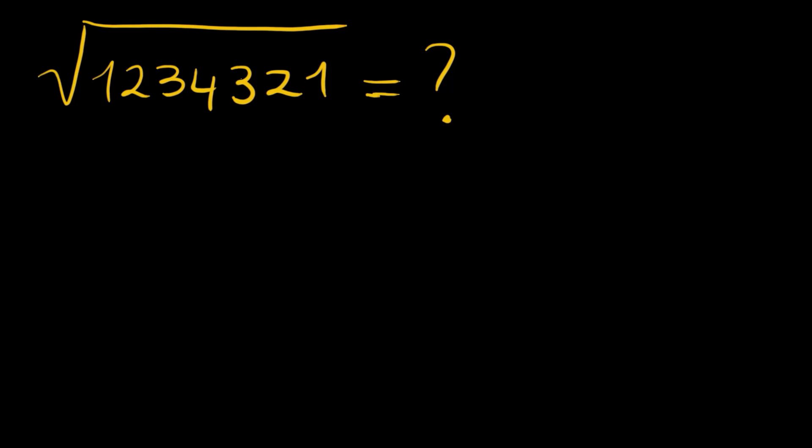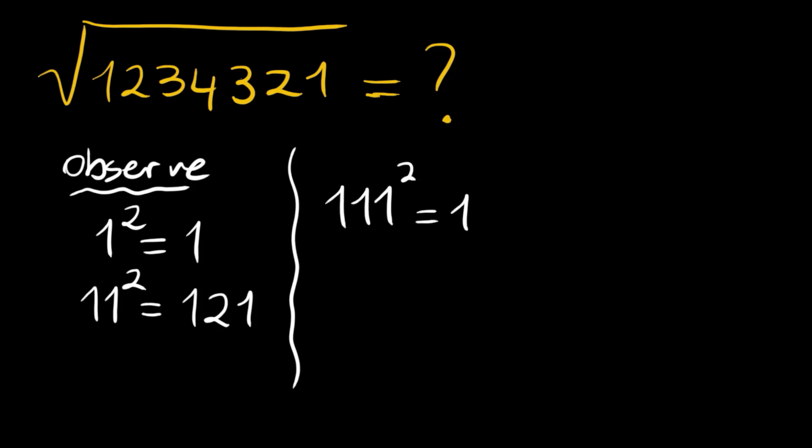We want to calculate the square root of this number. Let's observe some results. 1² is of course 1. 11² is 11 times 11, which equals 121. 111² becomes 12,321.